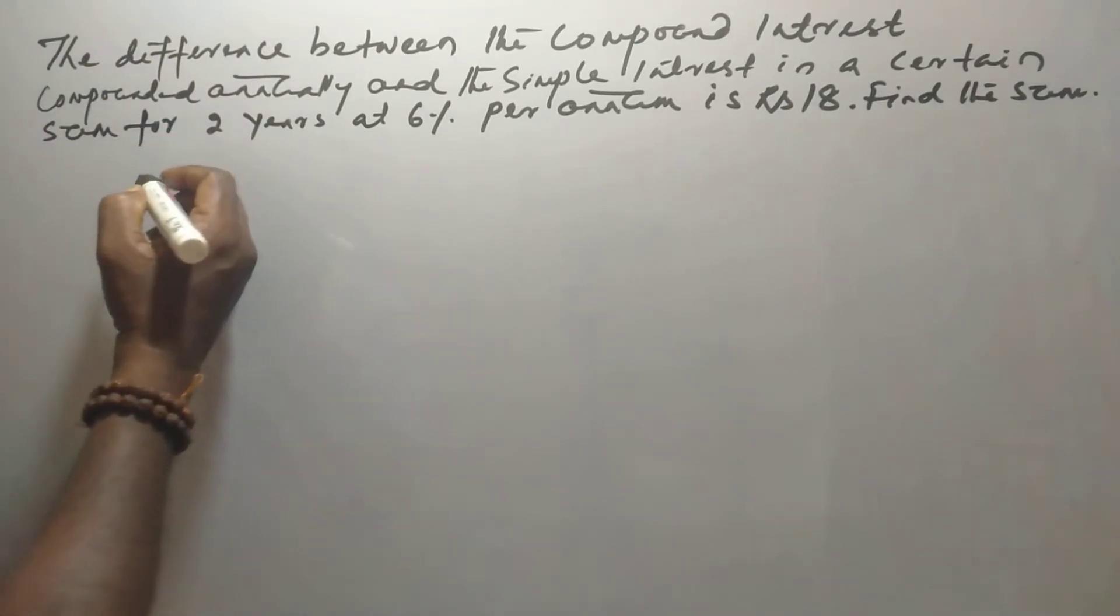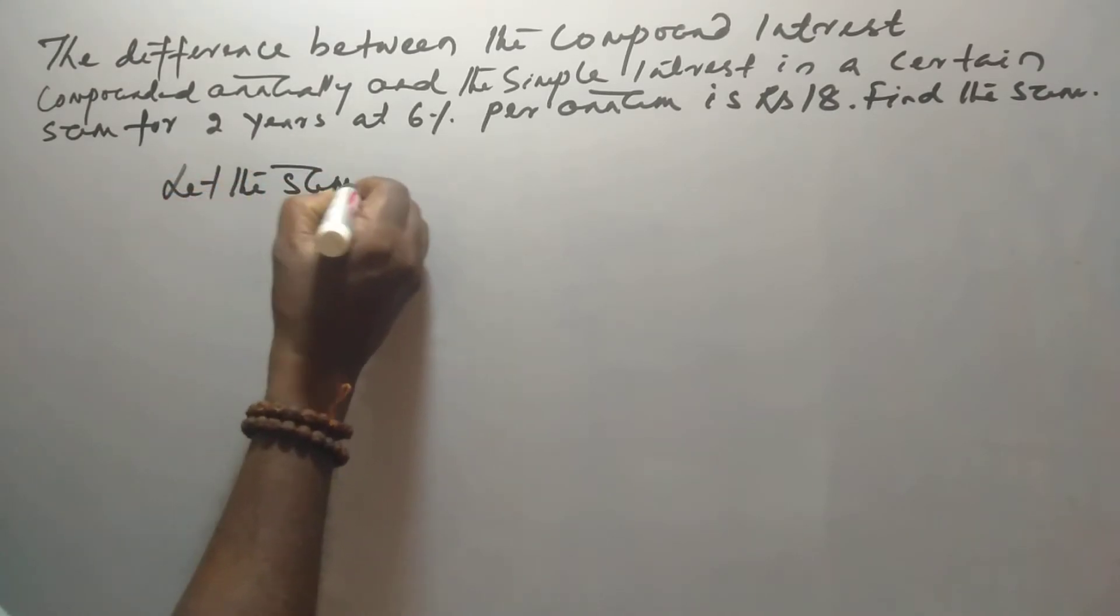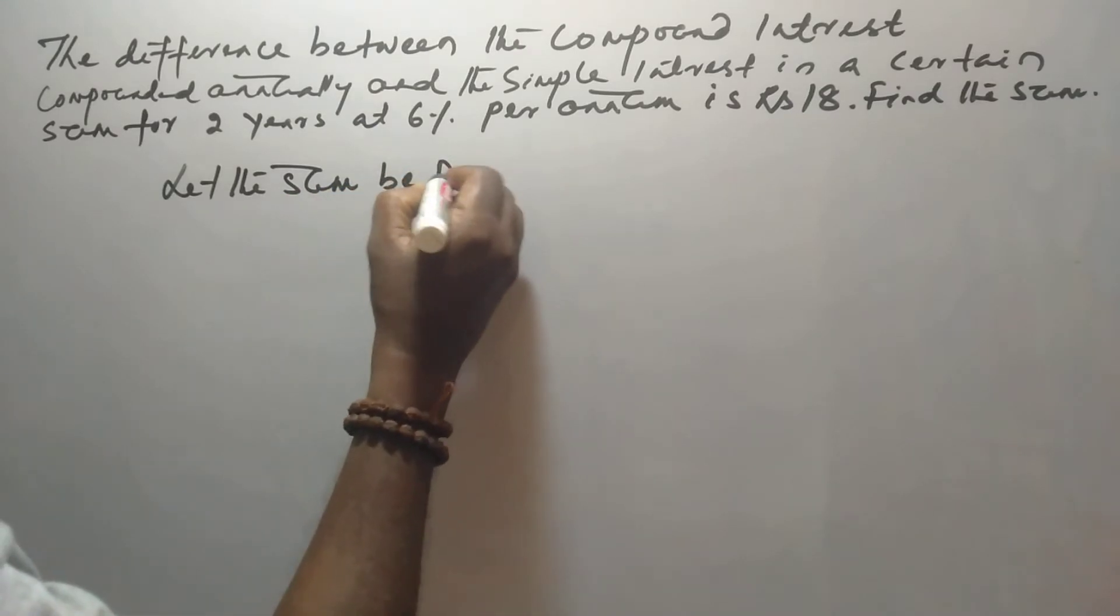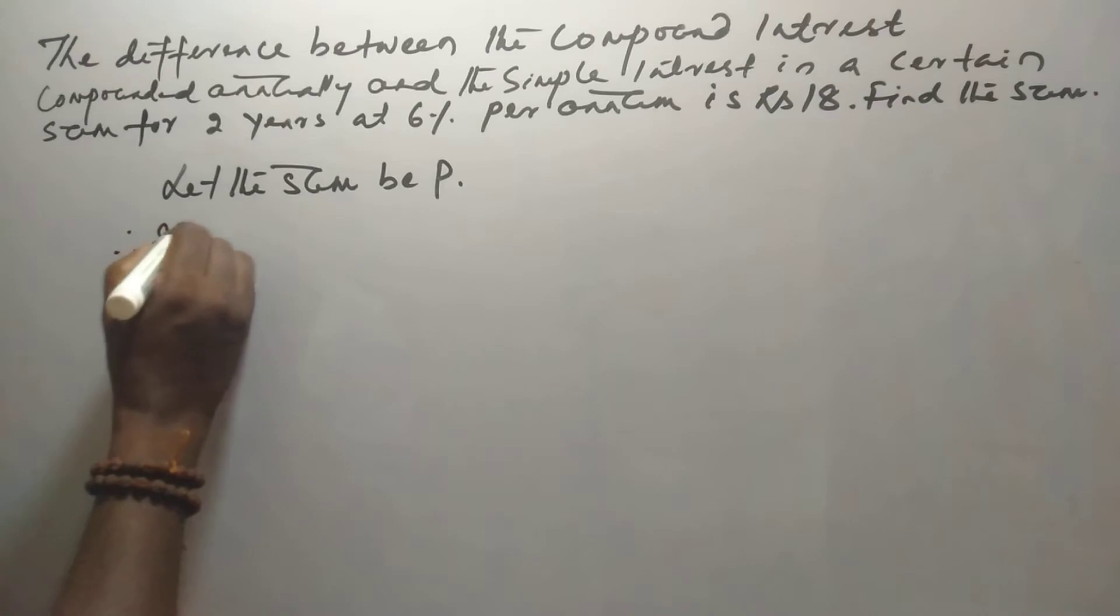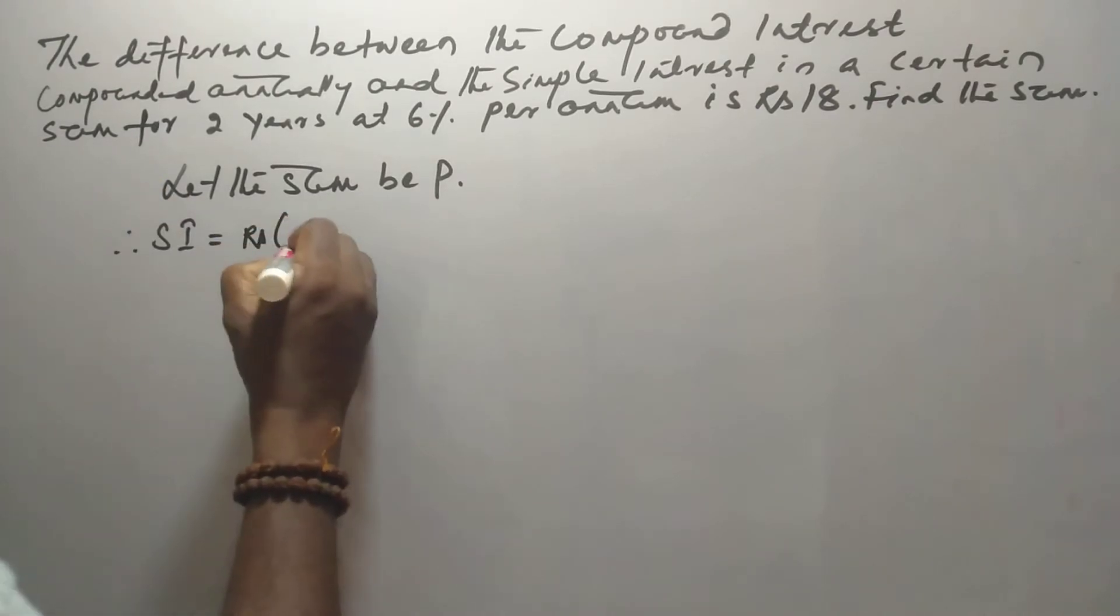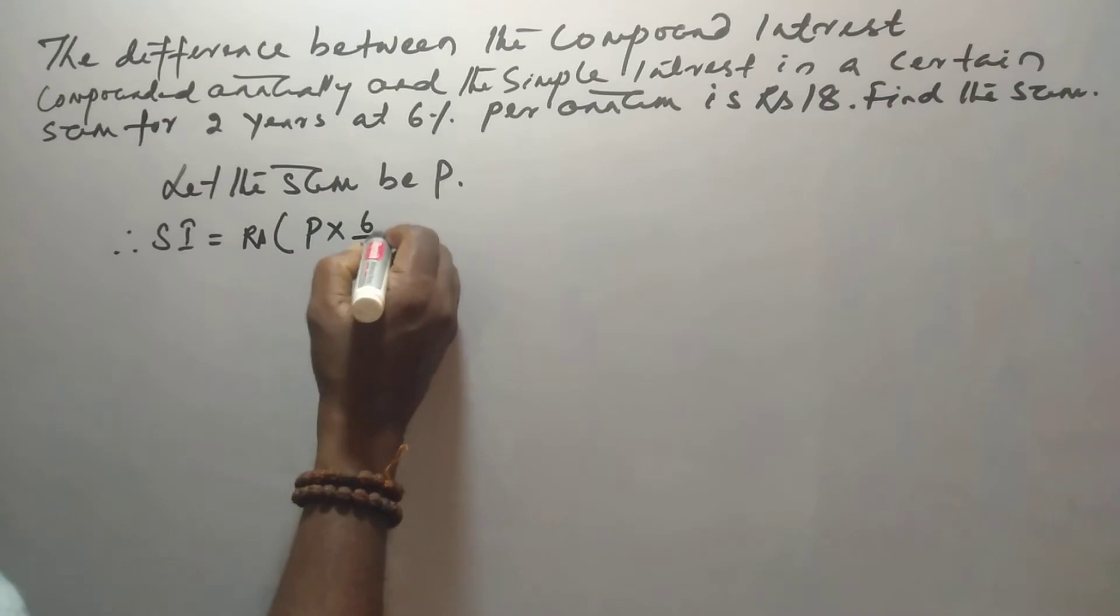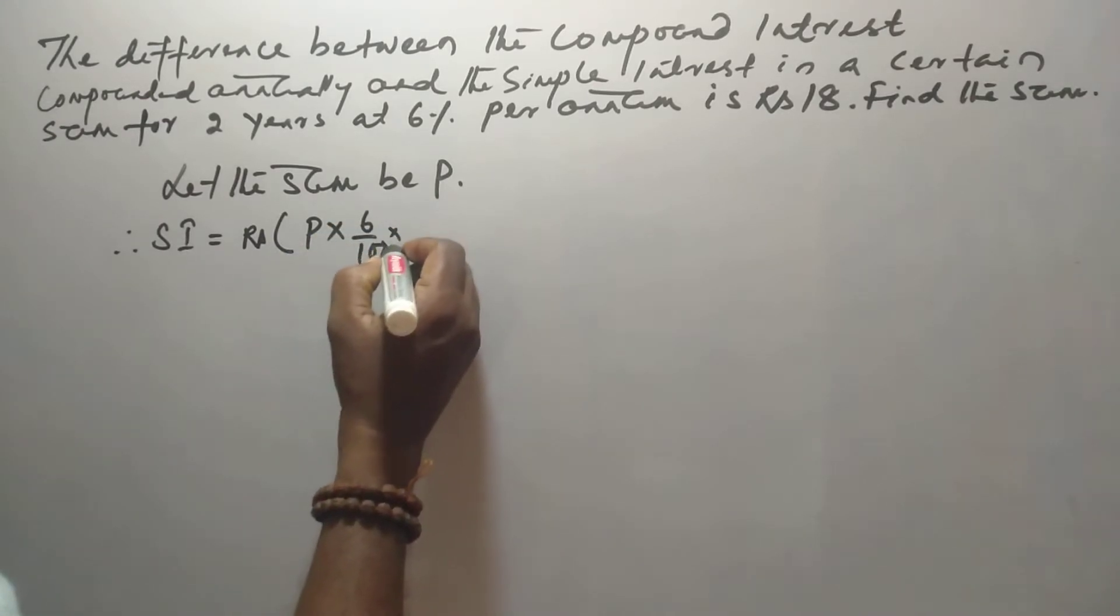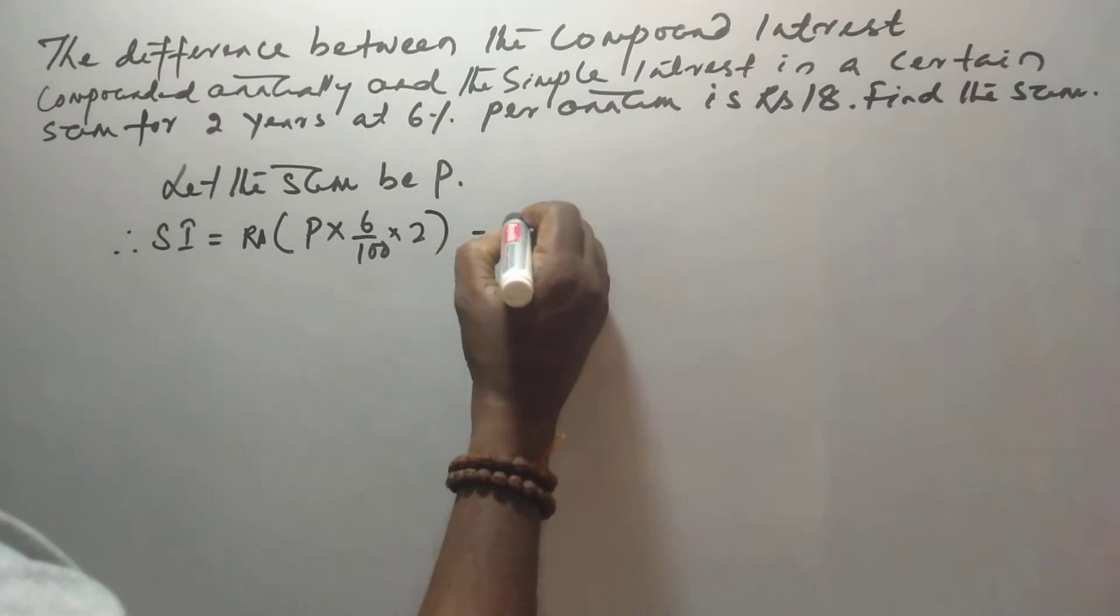Now, let the sum be P. So the simple interest, SI, is equal to Rs. P into 6 by 100 into 2, which equals Rs.